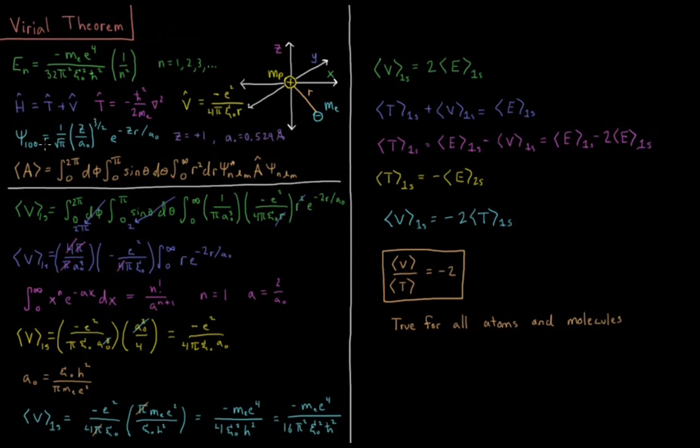The ground state atomic orbital for the hydrogen atom is psi 100 or the 1s orbital, which is 1 over the square root of pi times z over a naught to the three-halves times e to the minus z r over a naught. A naught is the Bohr radius, 0.529 angstroms or 0.529 times 10 to the minus 10 meters. Z is the integer number of protons in our nucleus, which is just plus one.